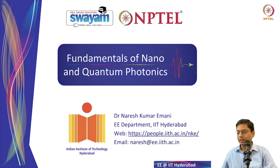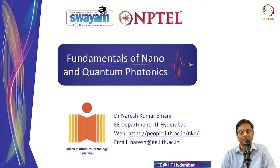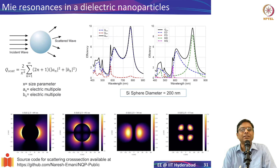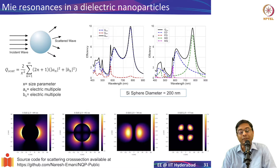Plasmonic metasurfaces suffer from one drawback: the inherent loss in the metal. We choose silver or gold because they exhibit extremely low loss, but even then that loss can be significant in some applications. In that scenario, dielectric nanoparticles or dielectric nanostructures are useful because they have extremely low loss.